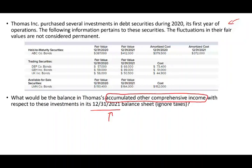Let's zoom in on what we need to know. We have three classes of investments in bonds: held-to-maturities, trading, and available for sale. Which one goes into comprehensive income? It's not held-to-maturity bonds, because those are reported at amortized cost. It's not trading securities — they are reported on the income statement. So we are dealing with available for sale securities.